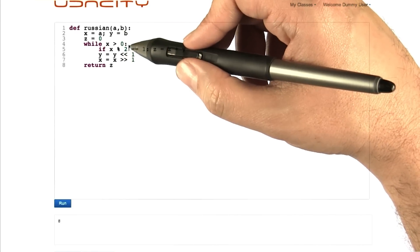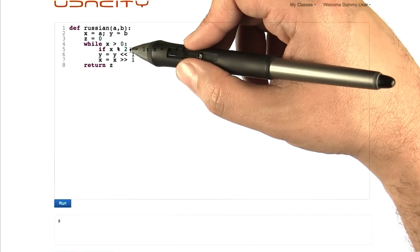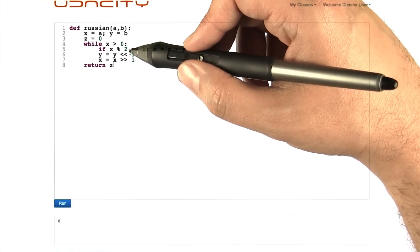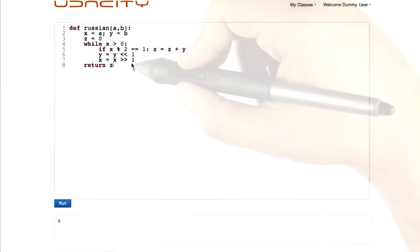So unless this is obvious to you, this may seem a little bit magical again. Why would this actually be equivalent to naive? Why would this actually be computing multiplication?